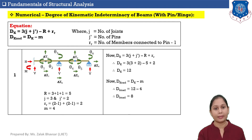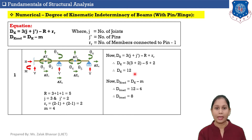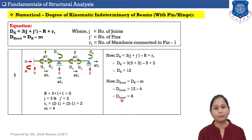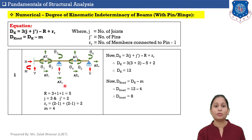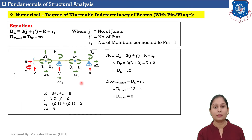Now let's calculate DK_NAD. DK_NAD equals DK minus M equals 12 minus 4 equals 8. DK_NAD is the degree of kinematic indeterminacy neglecting axial deformation. In the case of beams, axial deformation is horizontal displacement. From the figure, there are 4 horizontal displacements: 1 at the first pin, 1 at the first roller support, 1 at the second pin, and 1 at the second roller support. Neglecting these 4, total remaining displacements equal 8, matching the equation answer.